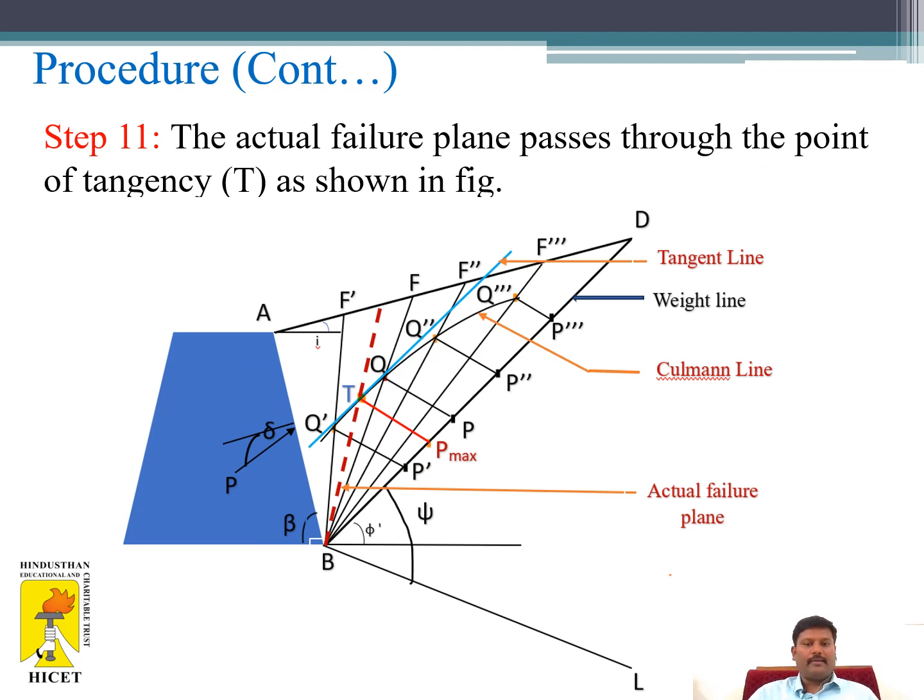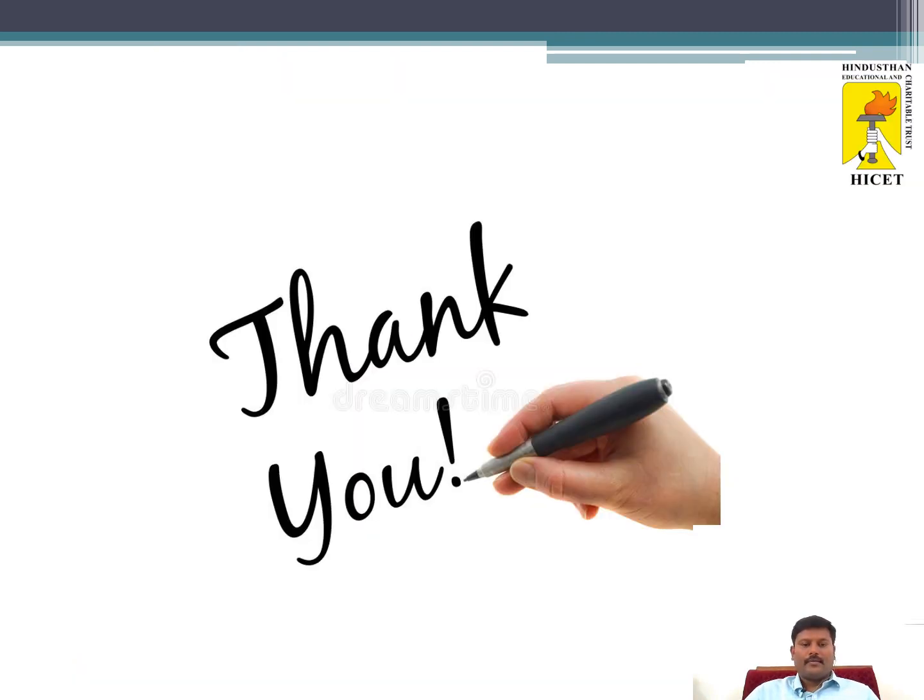The actual failure plane passes through the point of tangency T as shown in the figure. The red color dotted line shows the actual failure plane. Thank you.